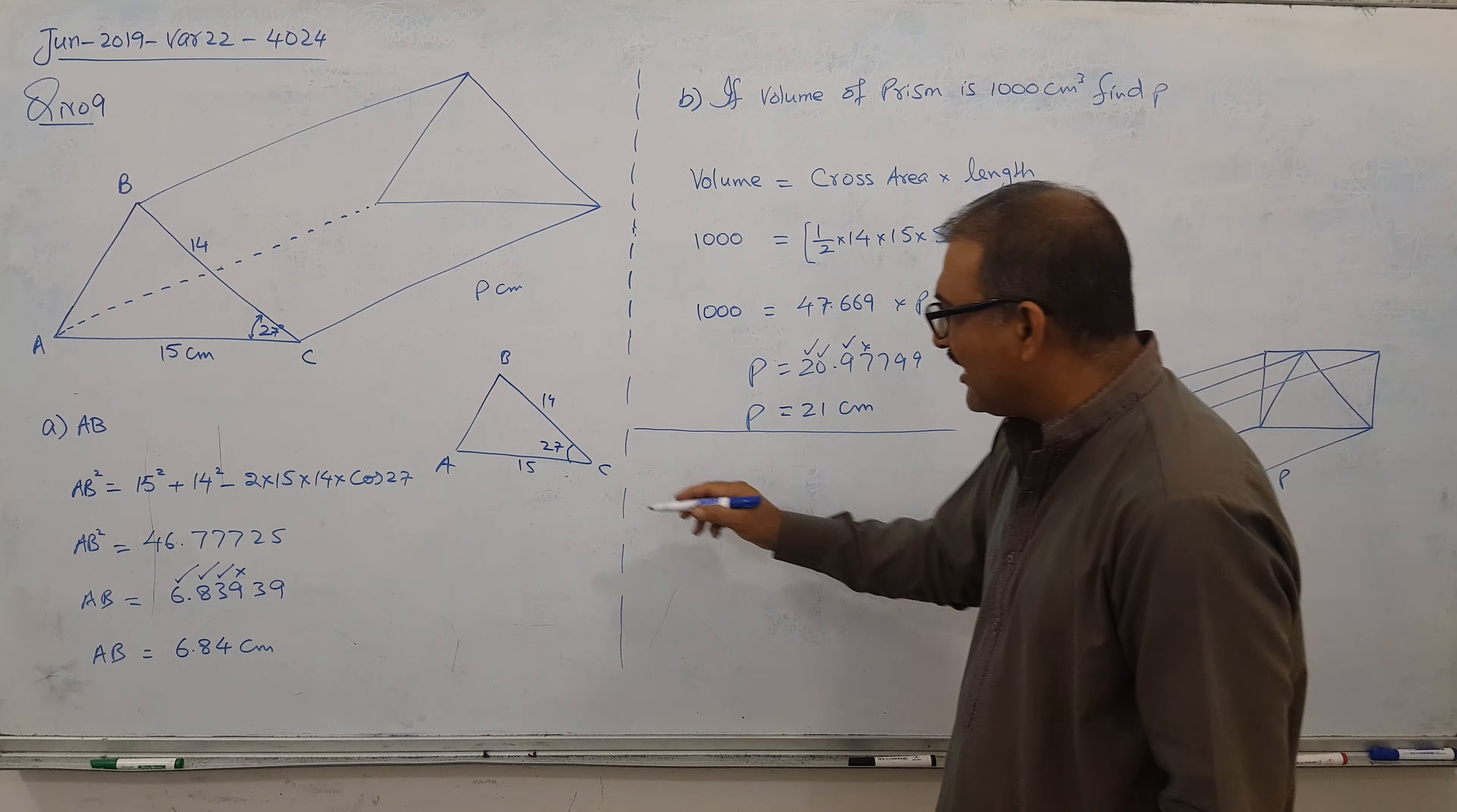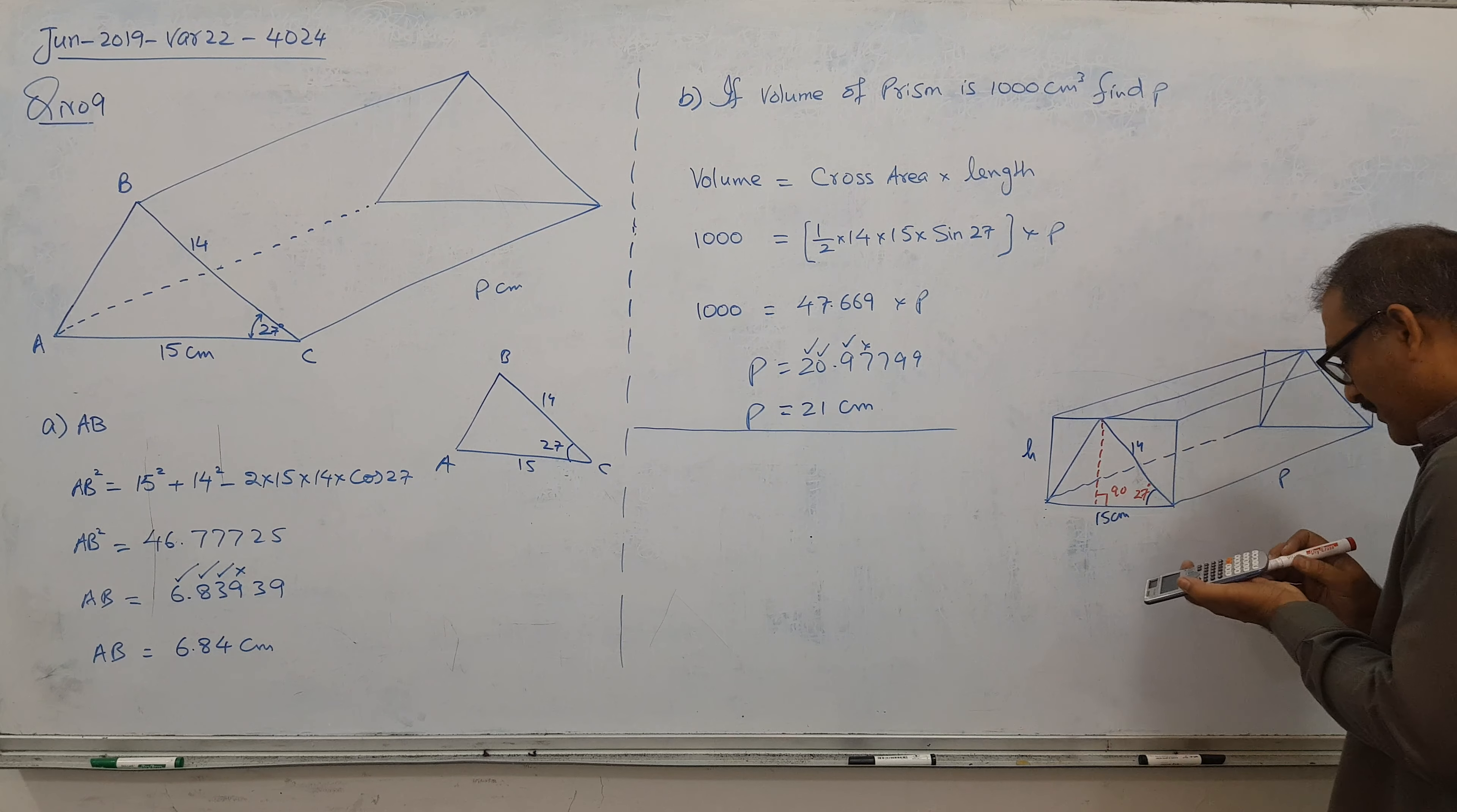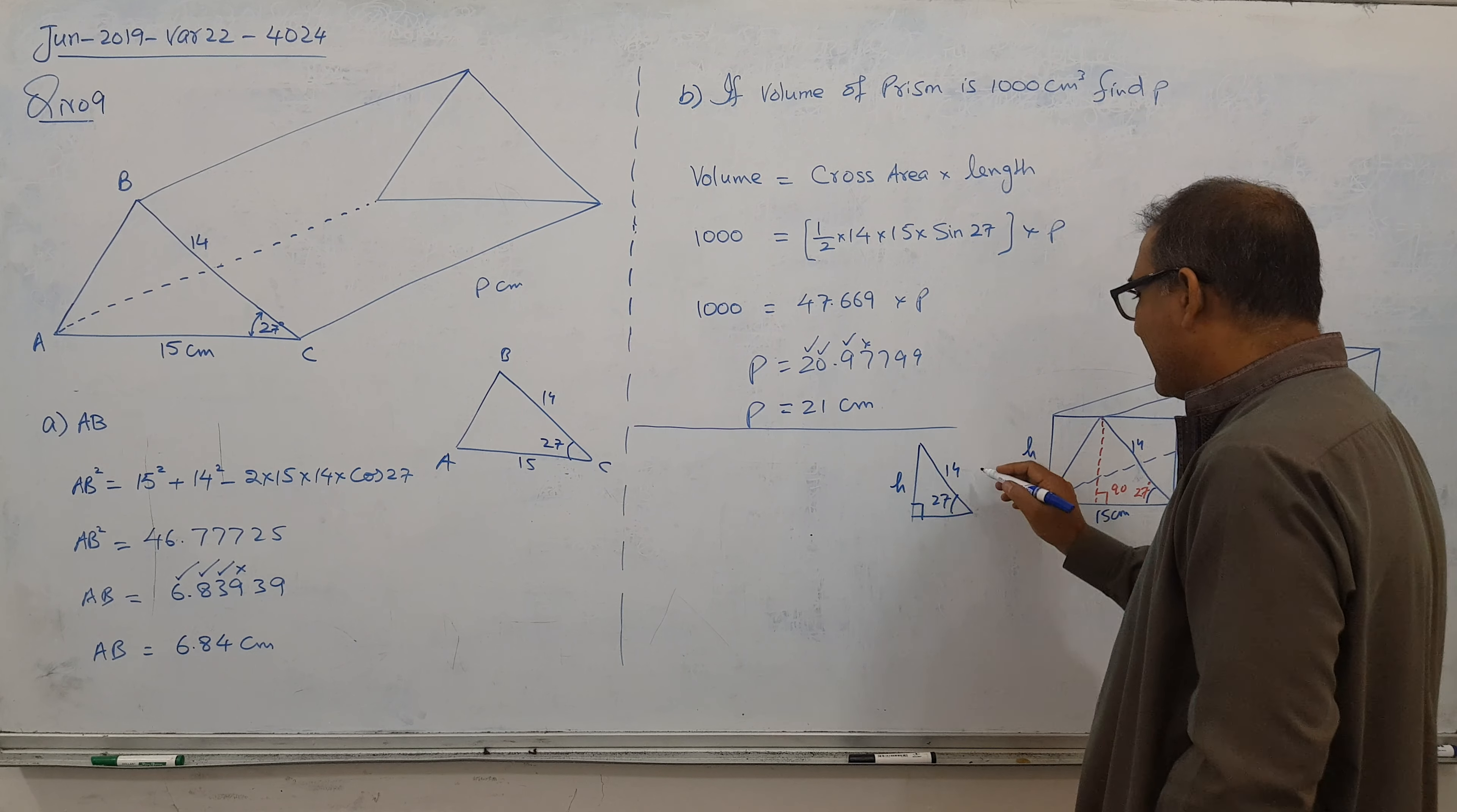So naturally, I think we have to drop a line here. If I drop a line here from the top, this is 90 degrees. And this angle is 27. So we got a triangle. Which kind of triangle? 90 degrees. This is 14, this is 27, and this is my height. So opposite by hypotenuse.